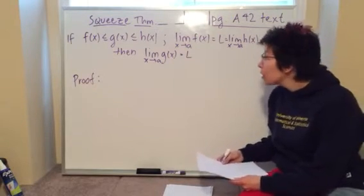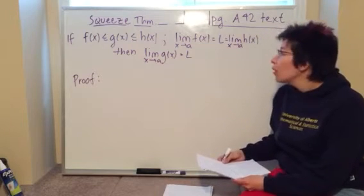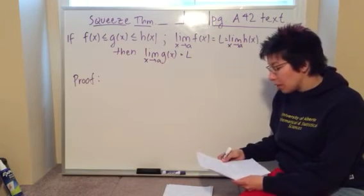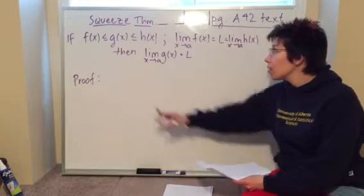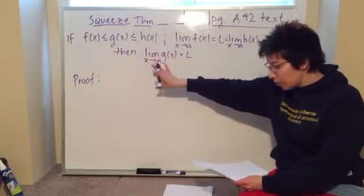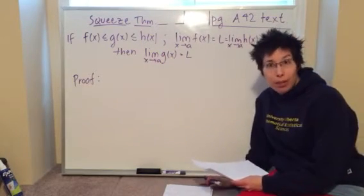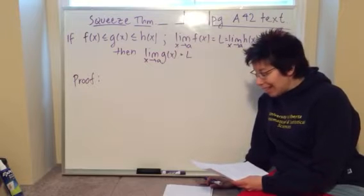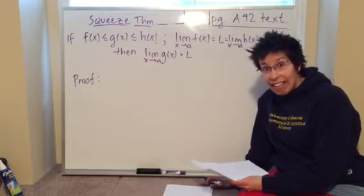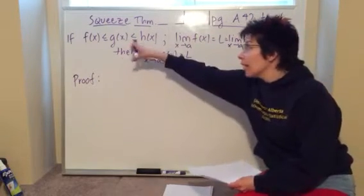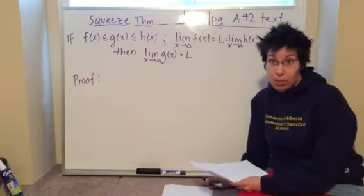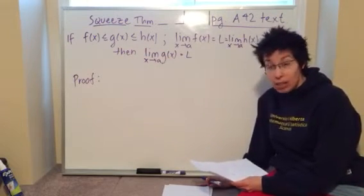So this is what the squeeze theorem says. It says if we have a function f(x) less than or equal to g(x) less than or equal to h(x), for all x in an open interval containing the point A, except possibly at A this doesn't hold, doesn't matter because limits don't care about x equals A.